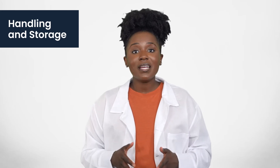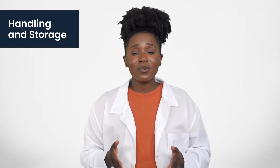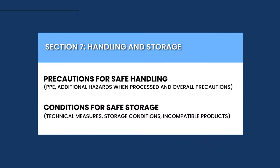Section 7 of the SDS provides information on how to handle and store the chemical safely. This section includes recommendations for handling such as using appropriate protective equipment, and instructions for storage like keeping the product in a cool, dry, well-ventilated area. It may also include information on incompatible products and substances that should not be stored together with the chemical.